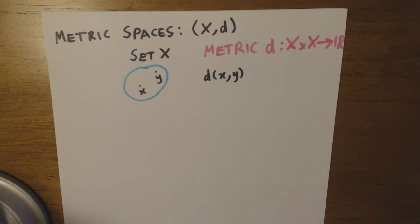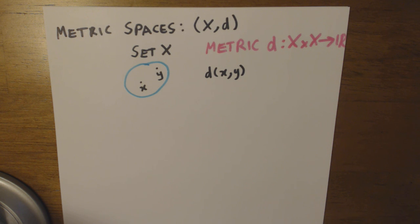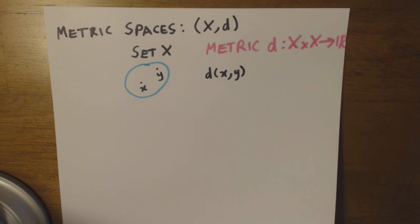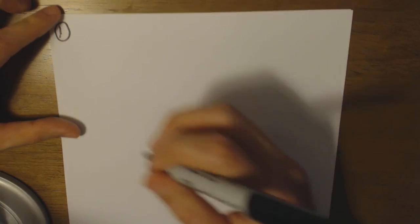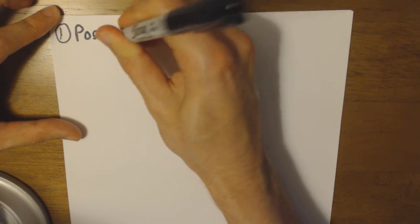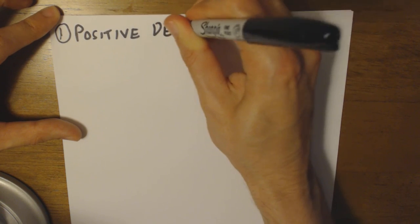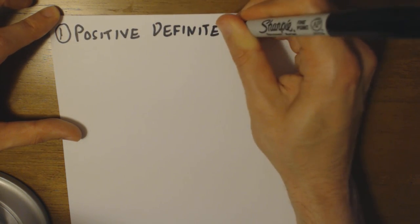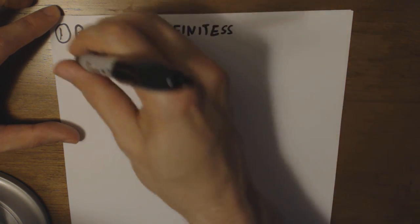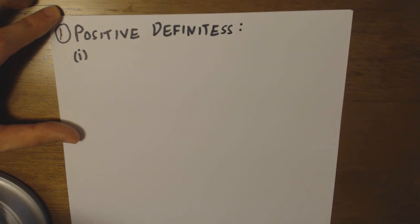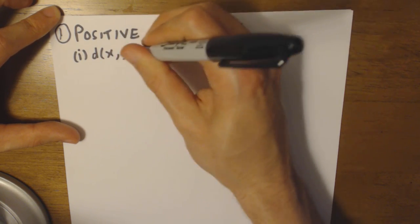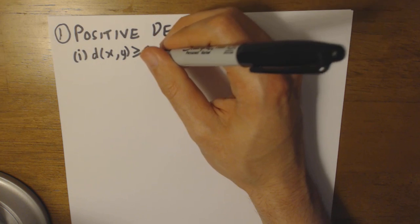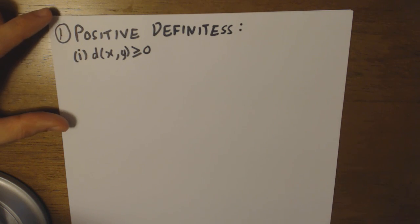So what are the conditions a metric has to satisfy, and that we can use to verify whether a function is indeed a metric? Well, these conditions are split up into three sub-conditions. The first one being positive definiteness. This condition has three sub-categories.